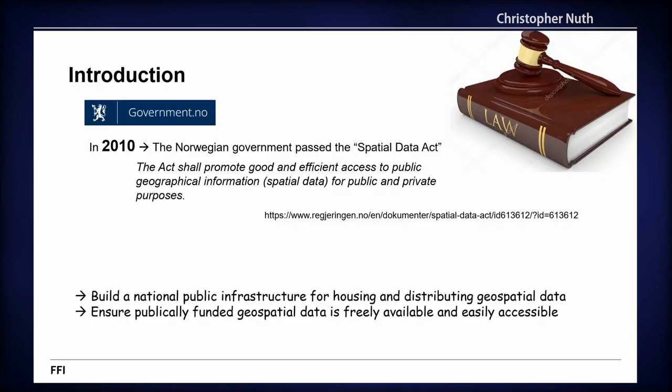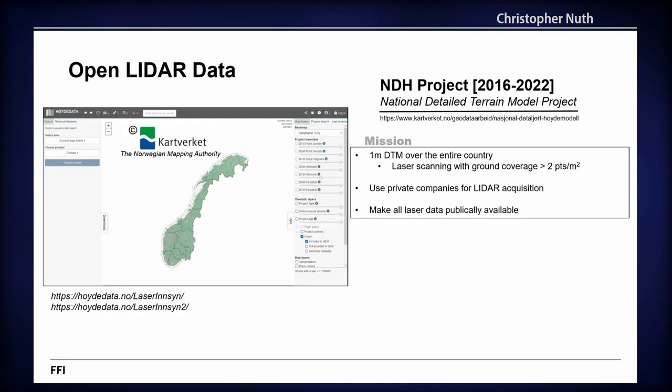In 2010, the Norwegian government passed the Spatial Data Act. This paved the way for opening up a national infrastructure for housing and distributing geospatial data. It also ensured anything publicly funded would be made available to the public for download. In 2016, the government started the National Detail Terrain Model Project, with a mission to create a one-meter DEM over the entire country using laser scanning, with ground coverage greater than two points per square meter. Only private companies were used, and all data was made publicly available.